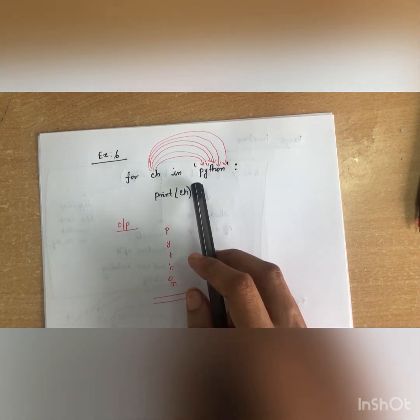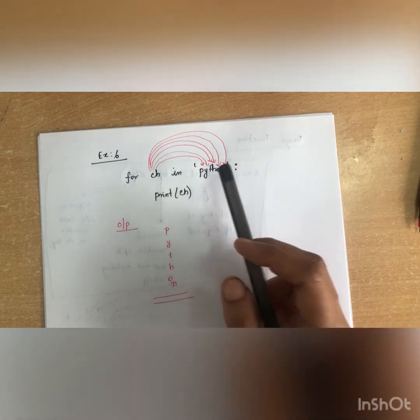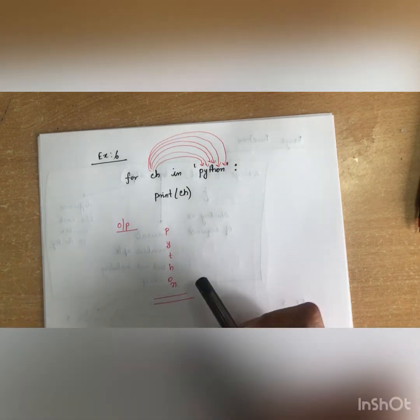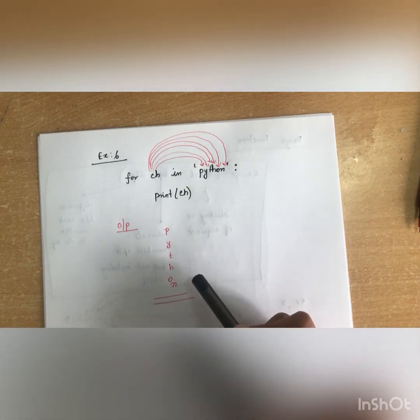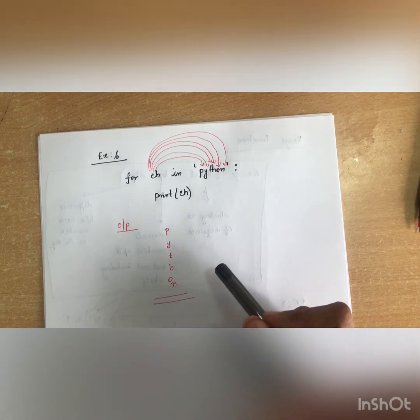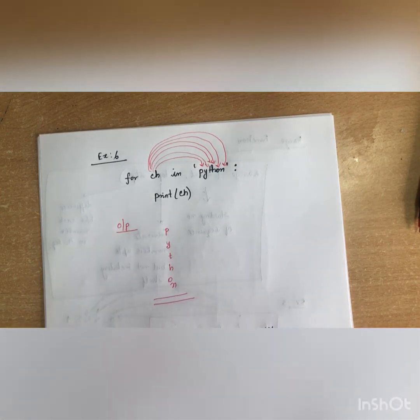So I think you all have understood the concept of while loop and for loop in Python. The next control structure is nested loop, which I will be explaining in the next video. Thank you all for watching.